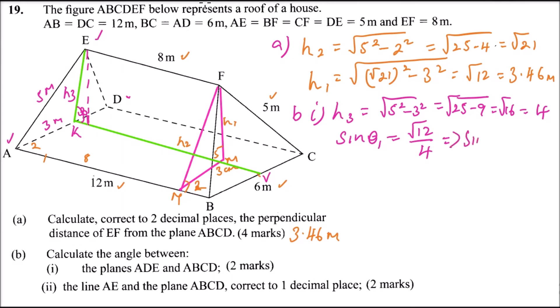We use sine and say sin θ1 equals √12 divided by 4. Using the calculator: divide √12 by 4, then press inverse sine, and we get θ1 equals 60°. That gives us two marks.